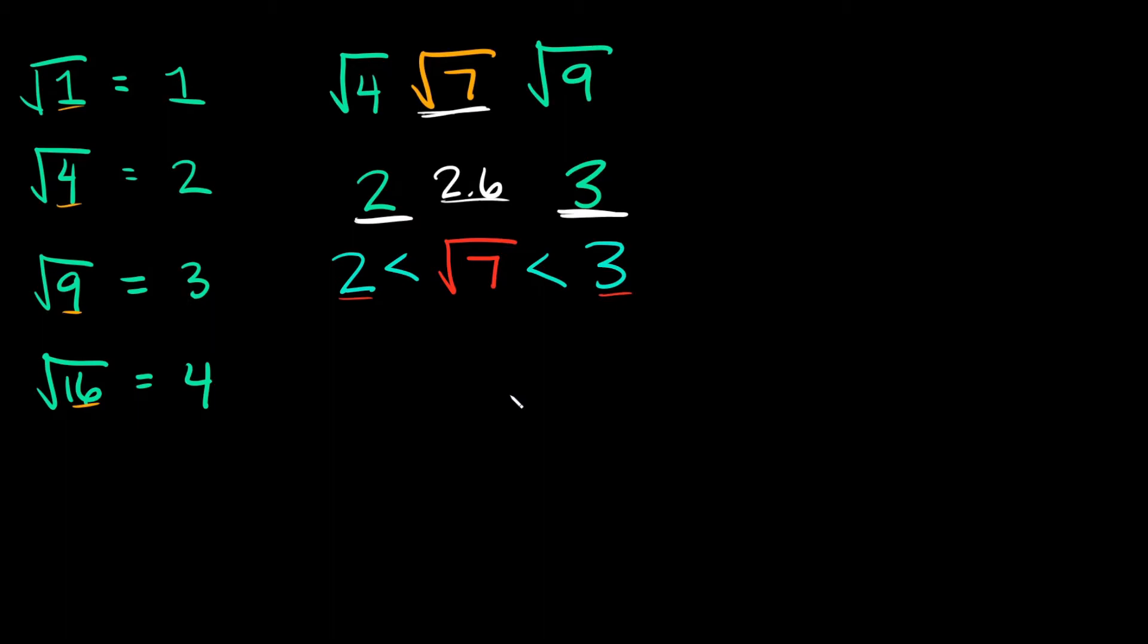Let's do a couple more examples using this same kind of thought process. What if I asked you to estimate the square root of 40? I don't know what the square root of 40 is, but I do know two numbers that are pretty close to it. The first one is the square root of 36, which is 6. The other one that's pretty close is the square root of 49, which is 7.